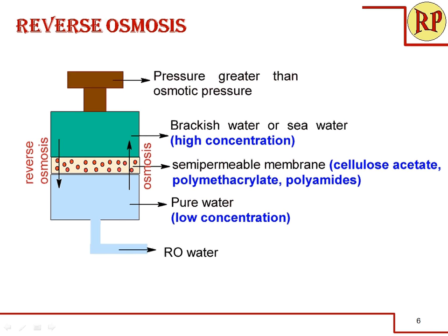Let us understand with a diagram. The compartment shown in green is brackish water, which is of higher concentration. The compartment shown in blue is pure water with a lower concentration. Both compartments are separated by a semi-permeable membrane, which is often made of cellulose acetate, polymethacrylate, or polyamides. We call it semi-permeable because it allows only the solvent — water in this case — but does not allow ions, minerals, or colloidal matter present in the water. When we apply pressure on the brackish water side greater than the osmotic pressure, the water moves from the brackish water or sea water side into the pure water compartment.